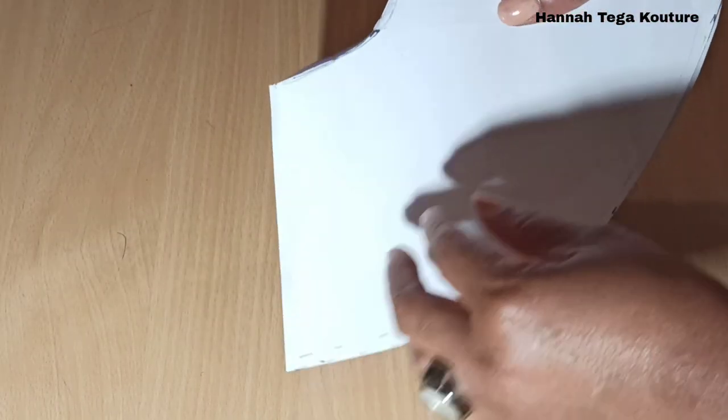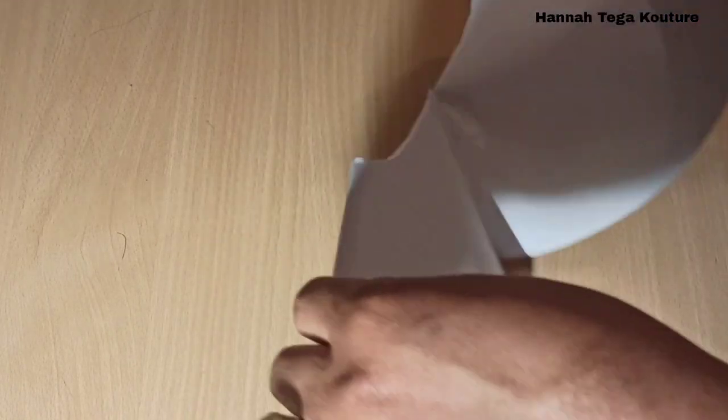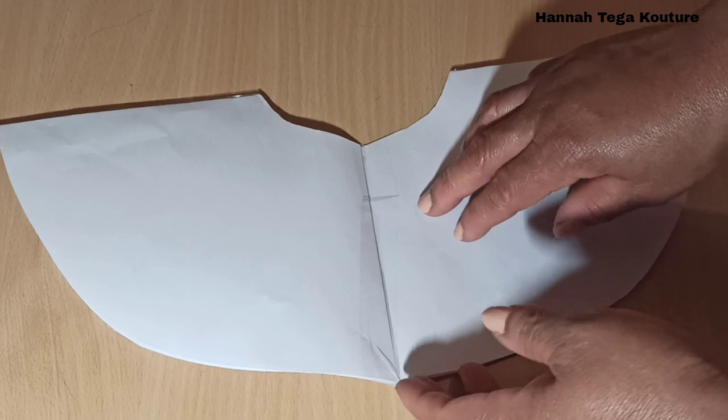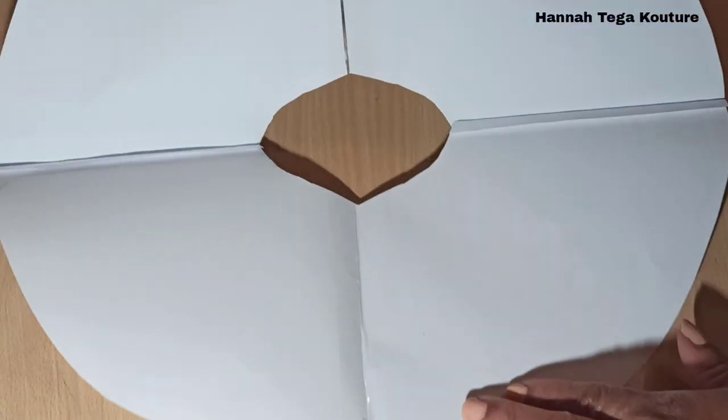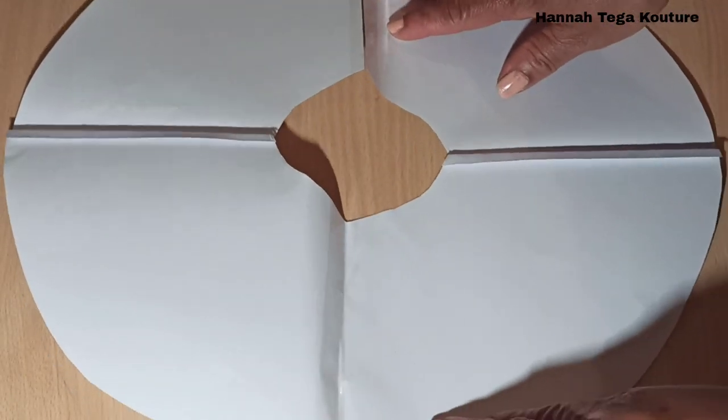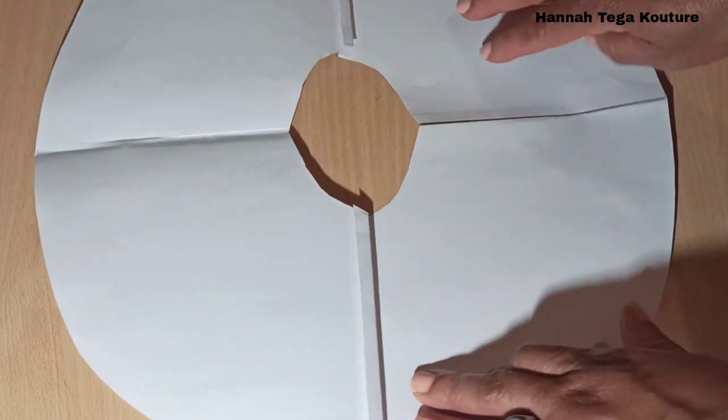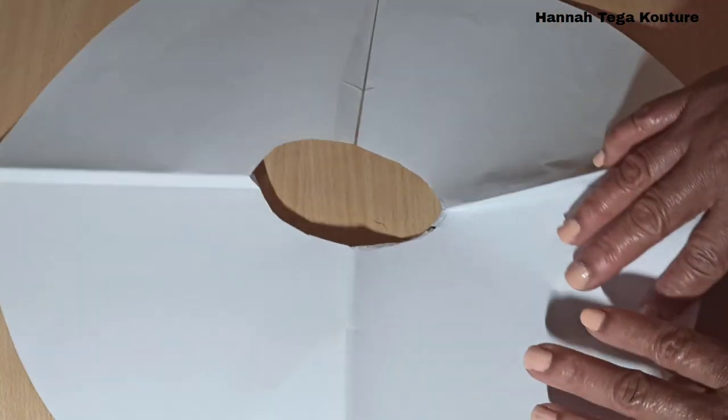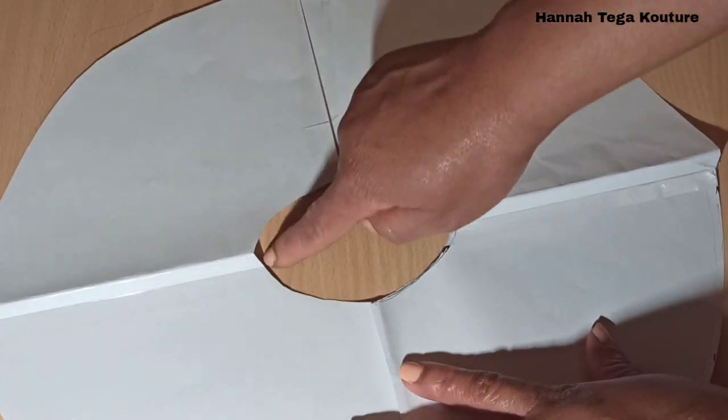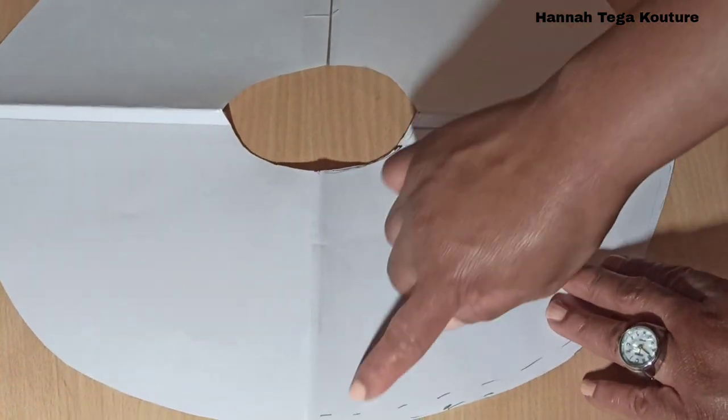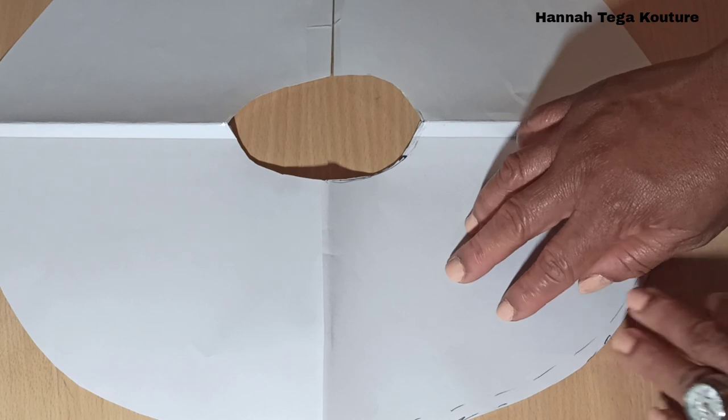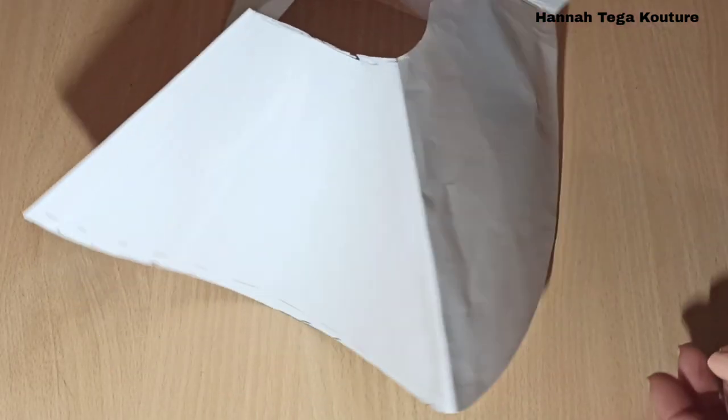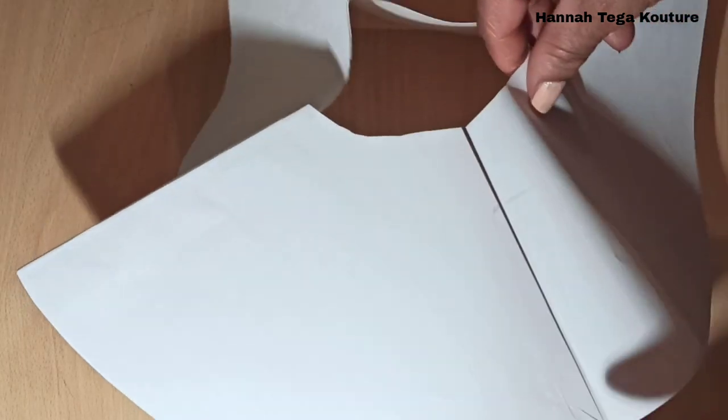You're going to have a slit for your zip allowance. So that's what you should have. Because I've taped the papers together, it's kind of a bit different, but that's what you should have: your circle in the middle and your round skirt. This is what you should have.